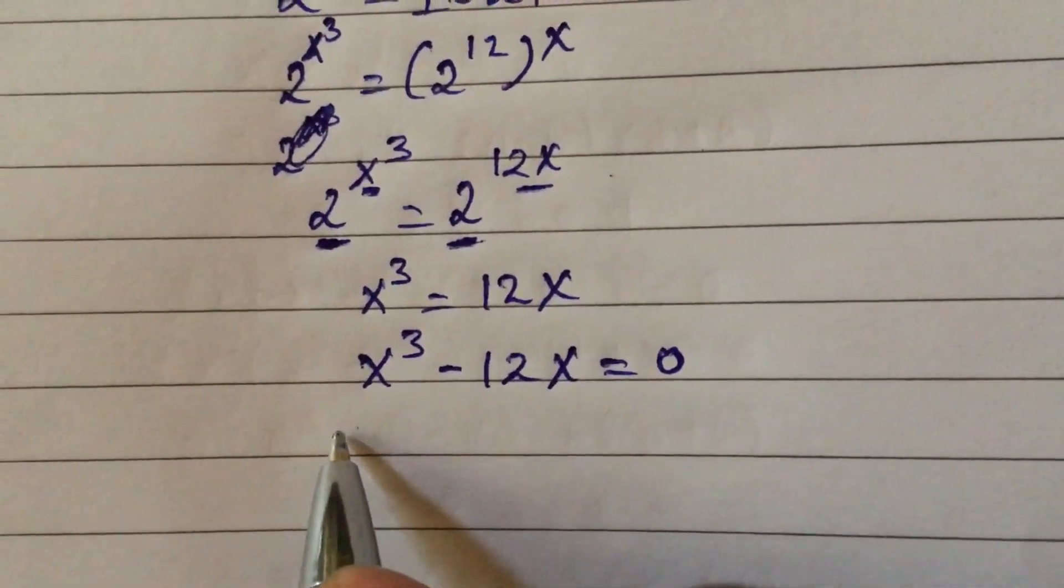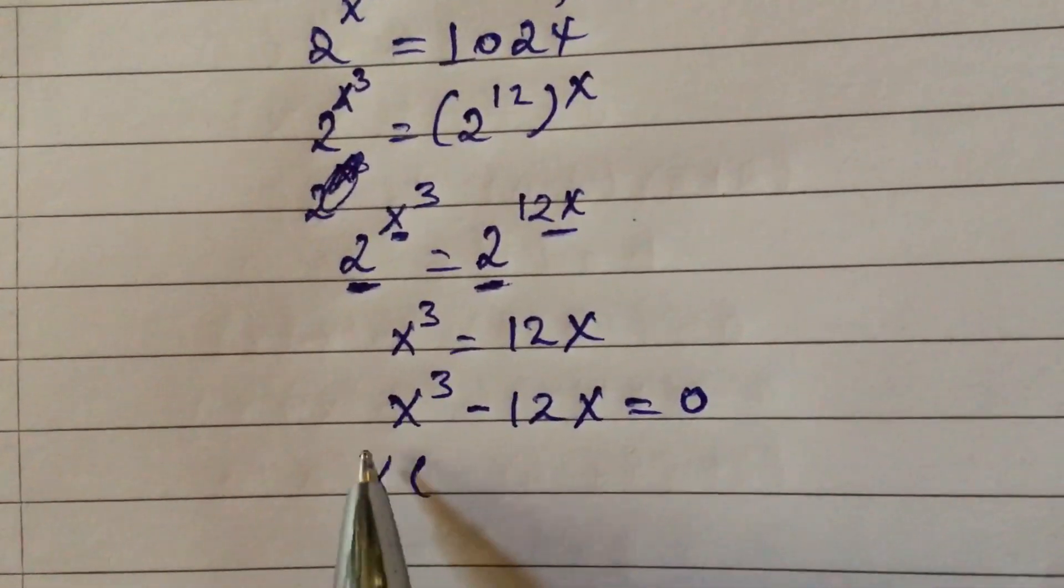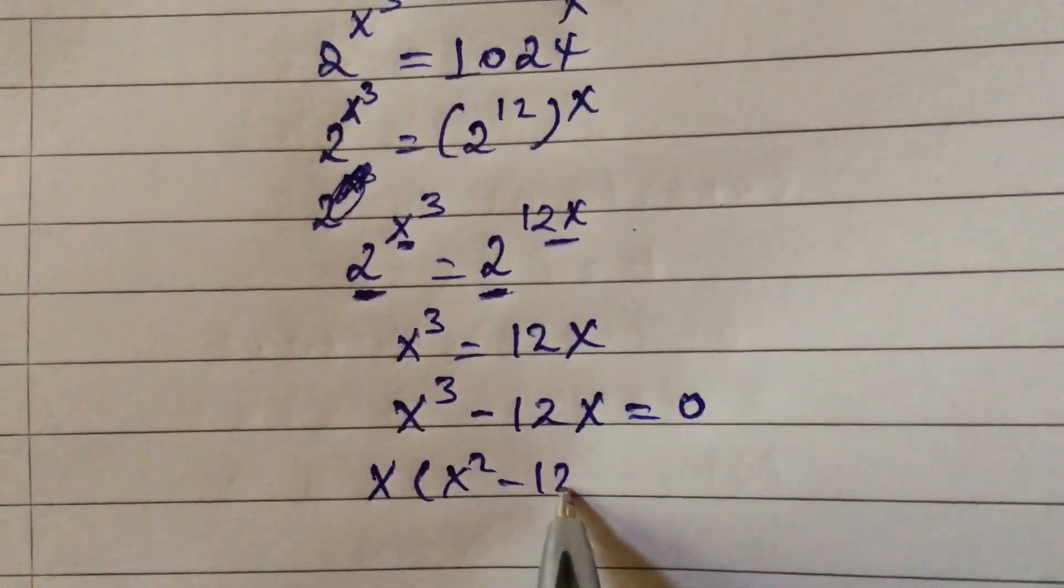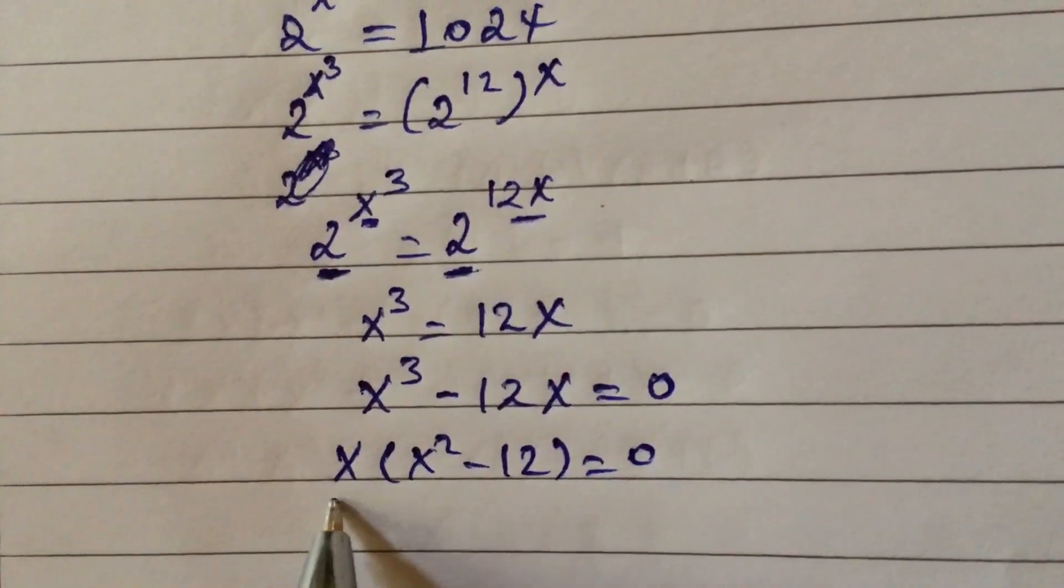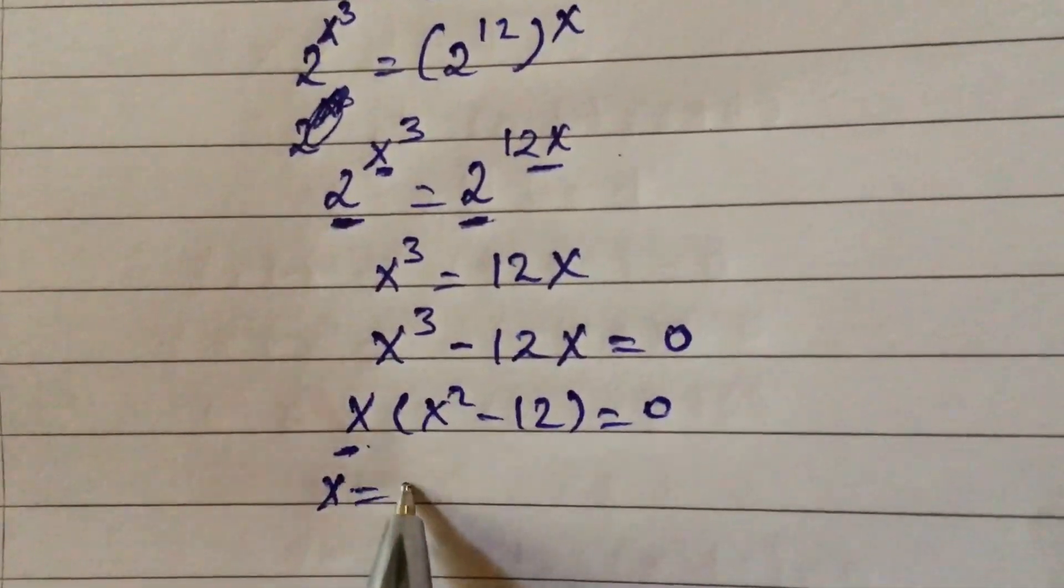Here, x common. We take the x common, so x squared minus 12 equal to 0. Here we have two cases: x equal to 0.